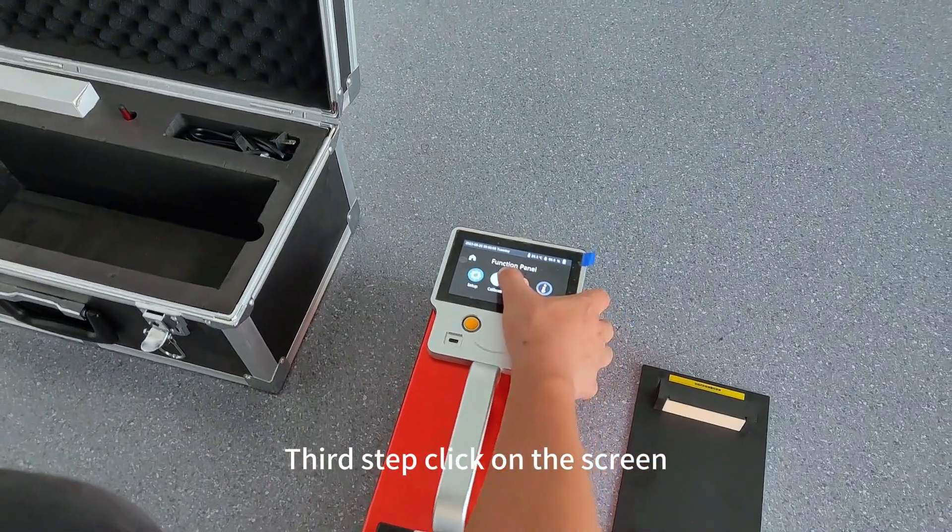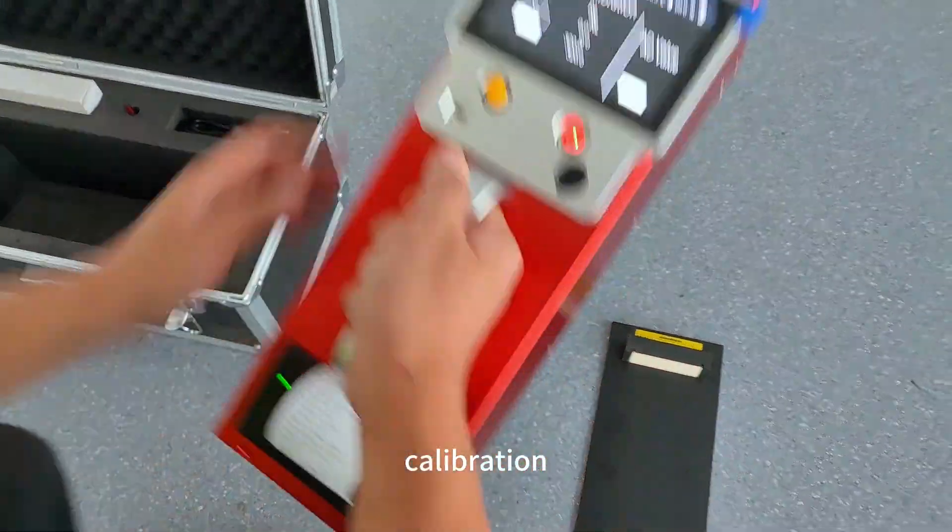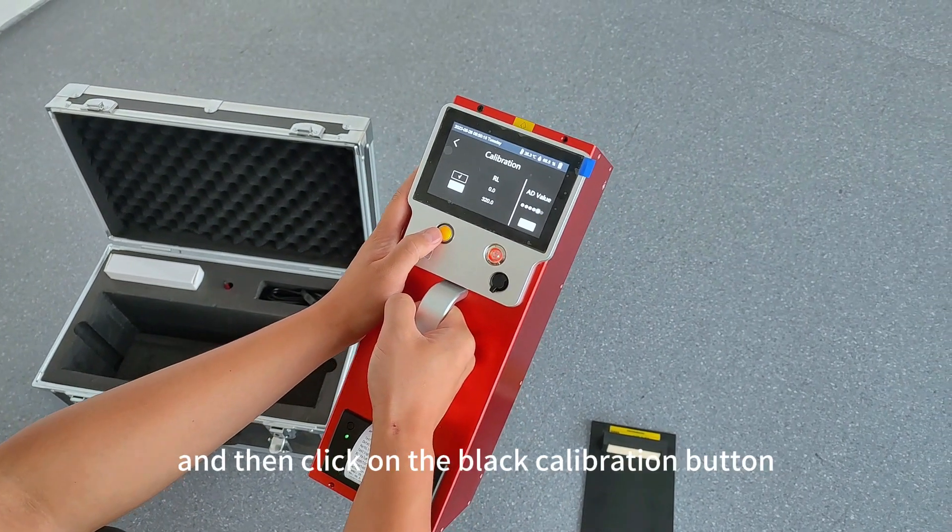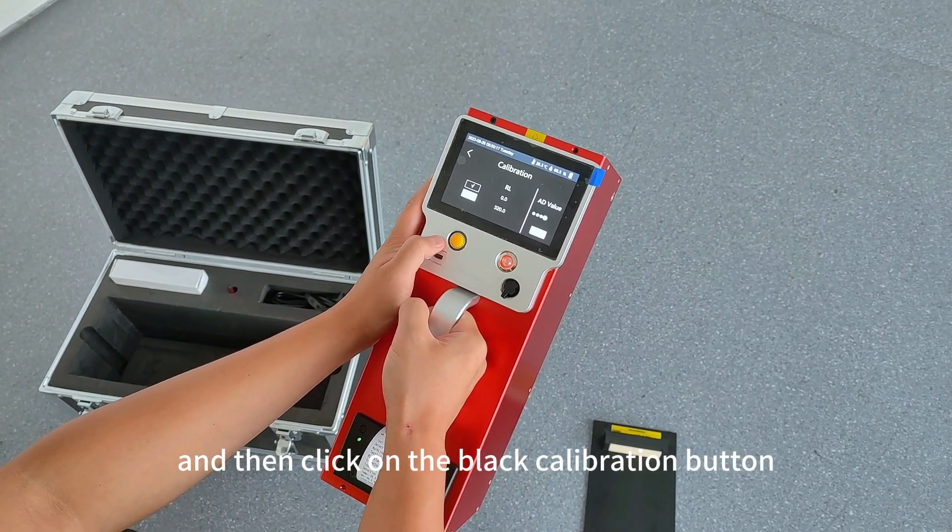Third step, click on the screen calibration button to align the device with non-reflective objects, and then click on the black calibration button.